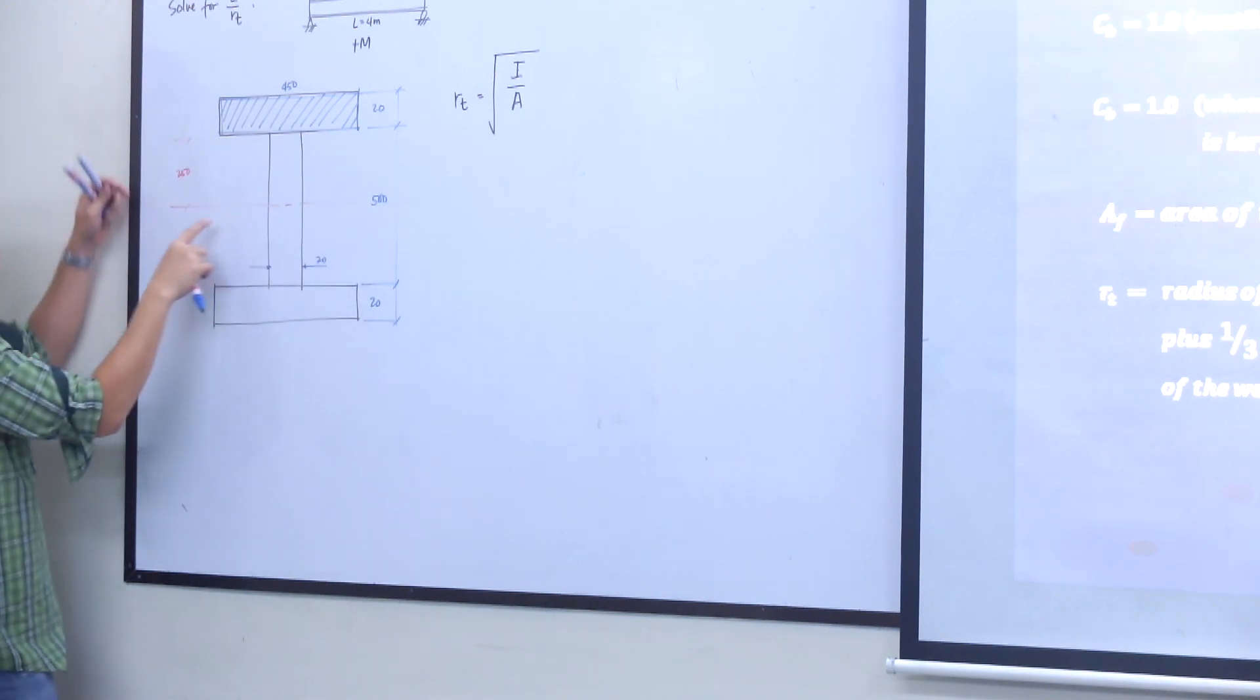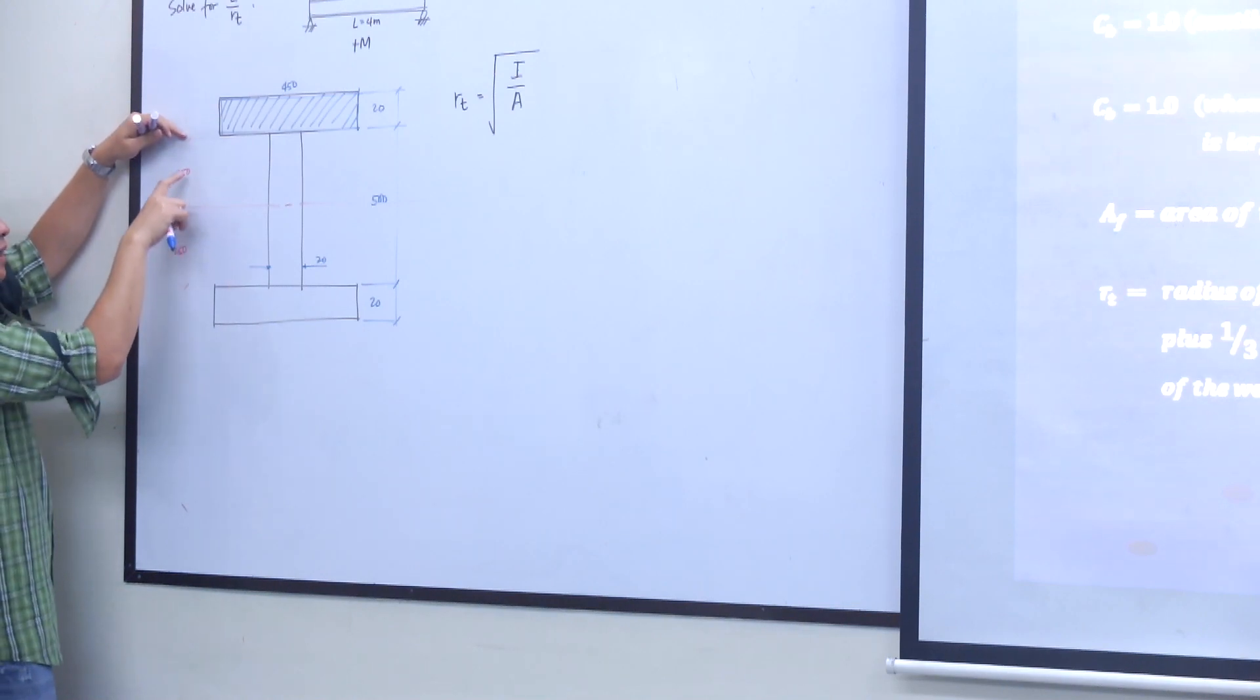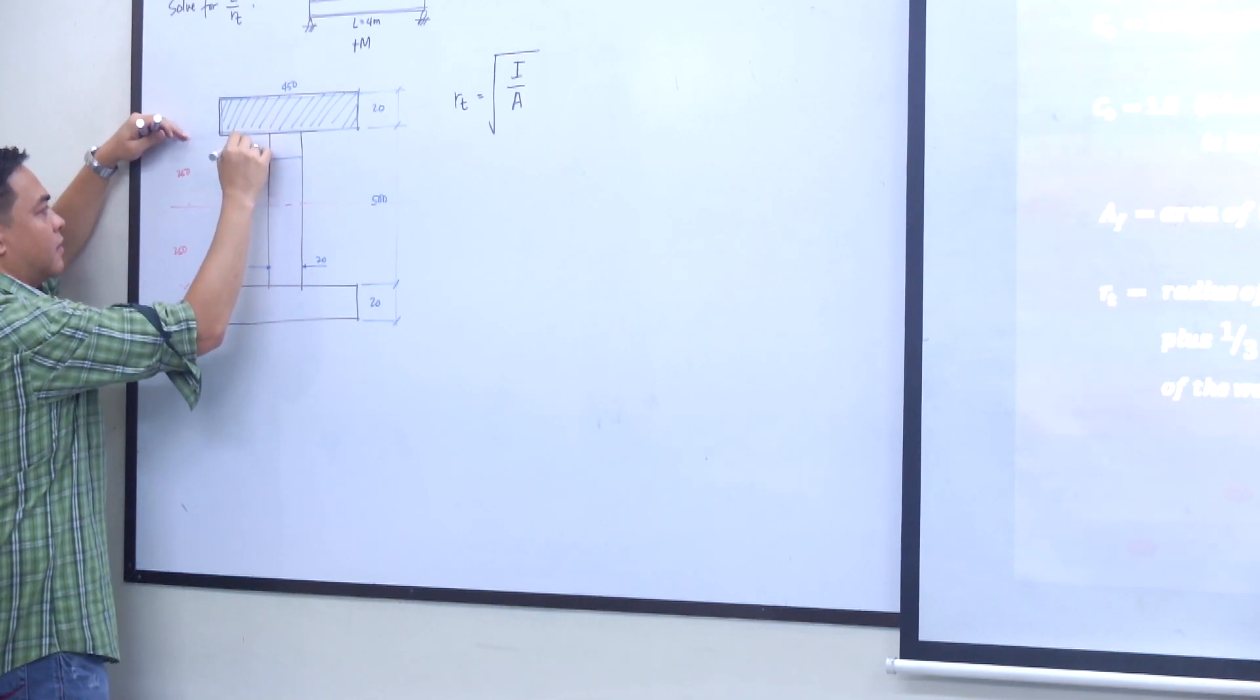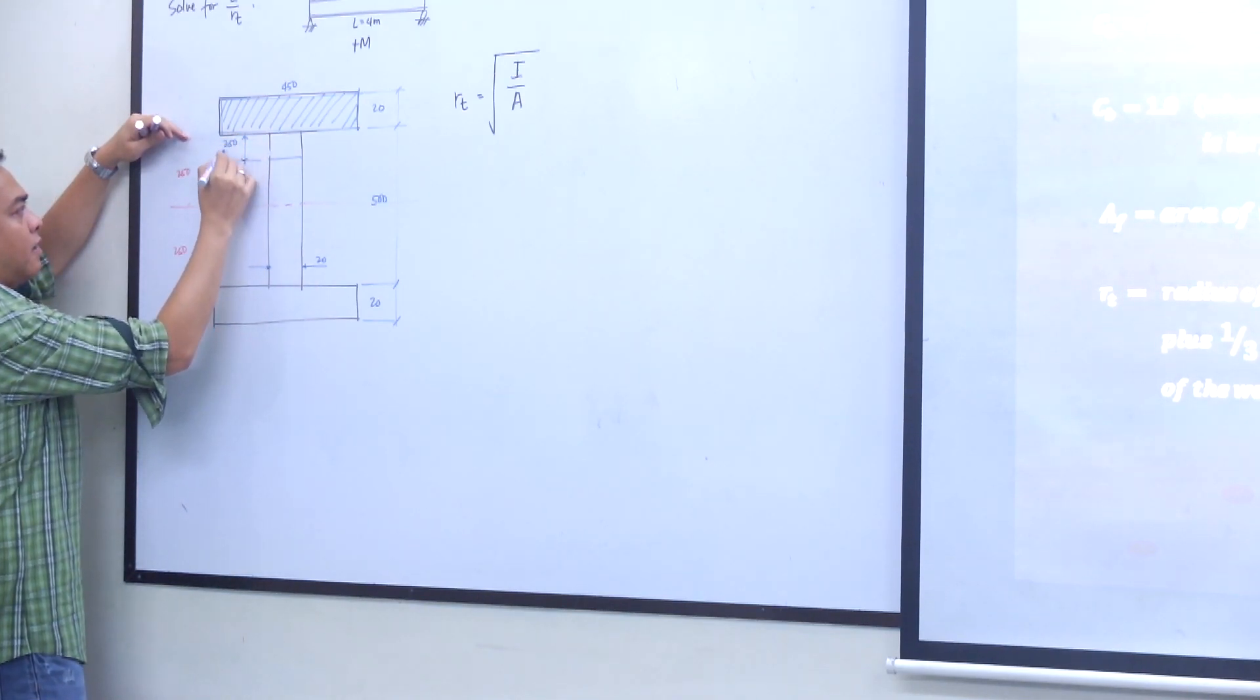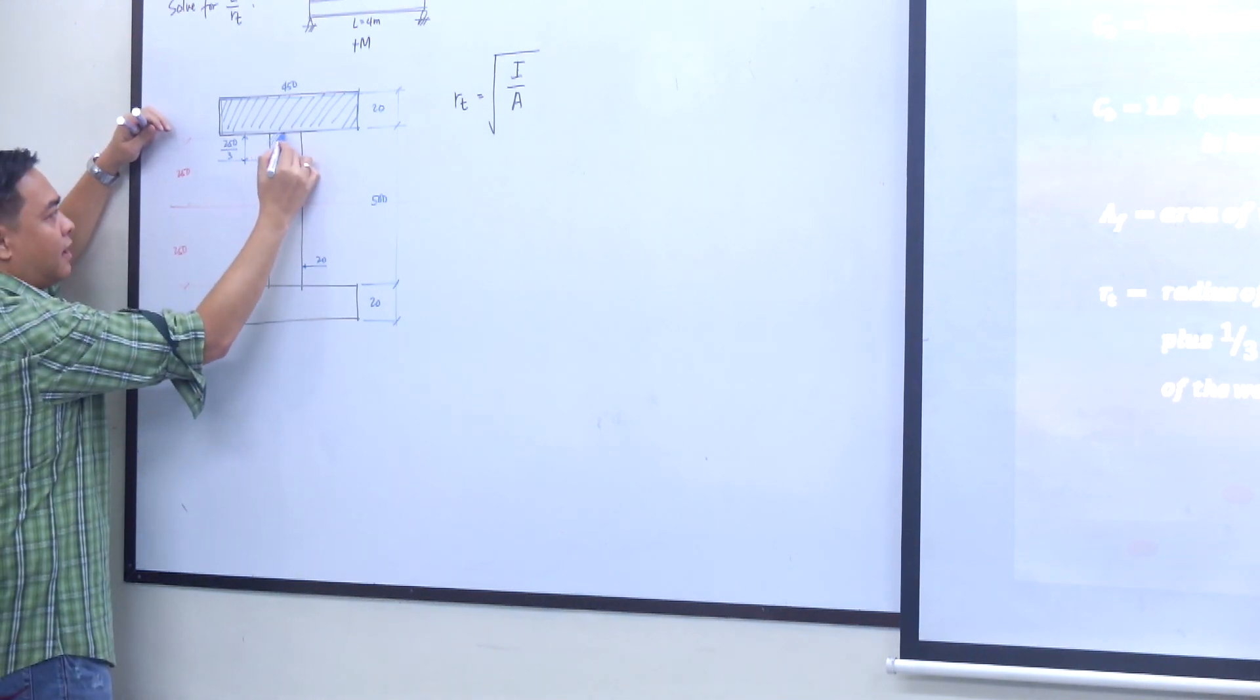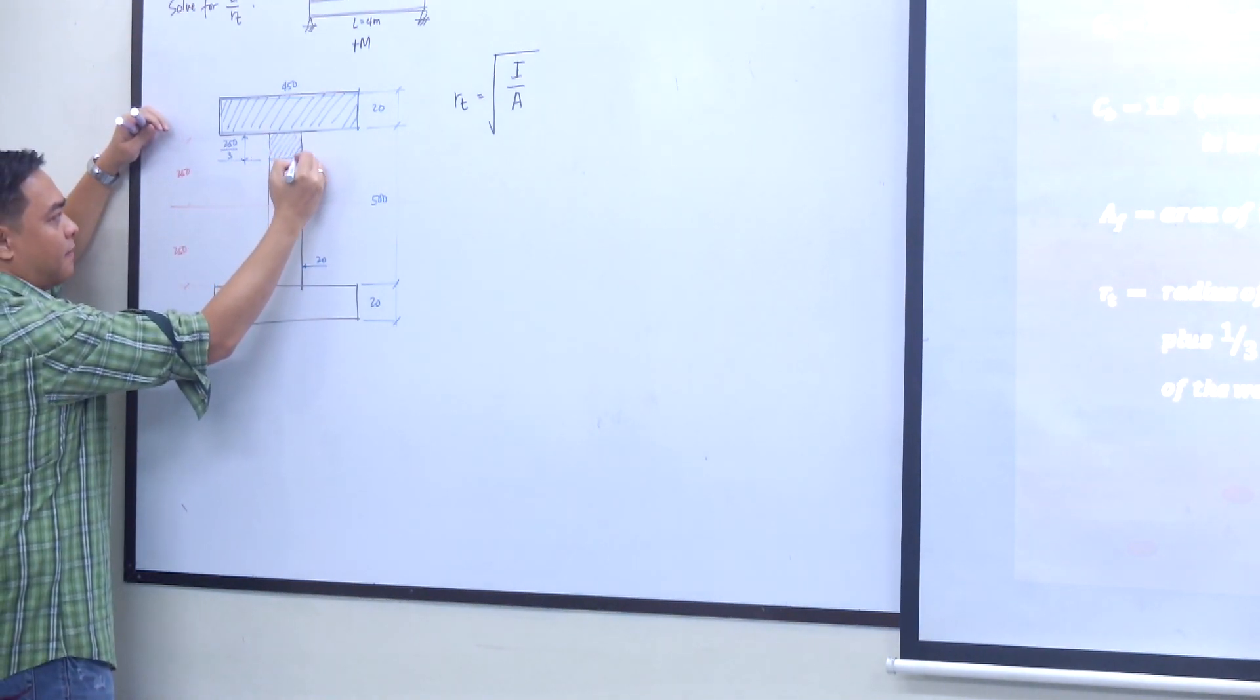This web is 250, so one-third of 250. This is 250 over 3, one-third of 250. This would be the one-third of the compression web.